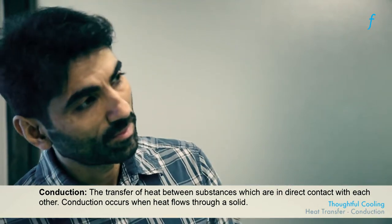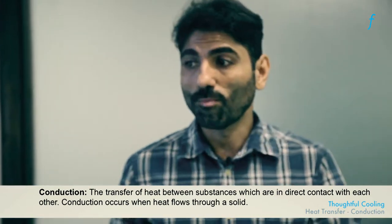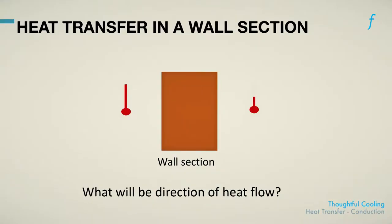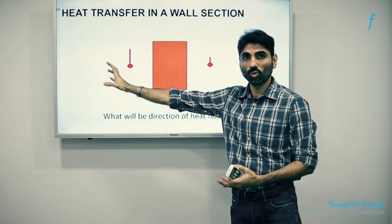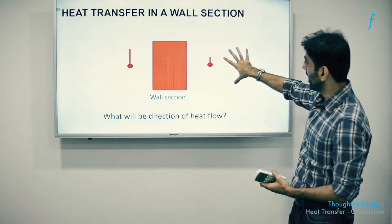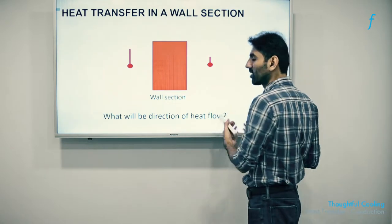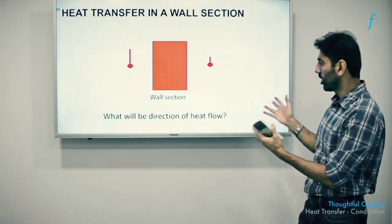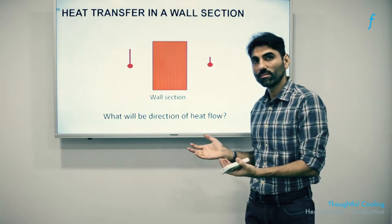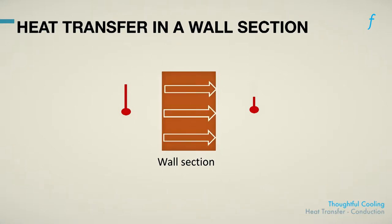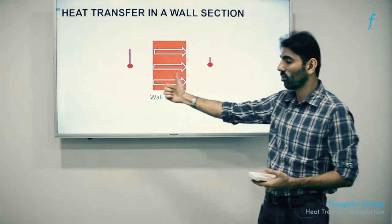Here is a question for all of us to ponder and come up with an intuitive response. Looking at a wall which experiences higher temperature on one side, perhaps through a source of heat such as the sun, and on the other side under the influence of a lower temperature, perhaps the inside of a building — which direction will the heat flow? We will all agree that because the temperature on the left side is higher, heat will flow in that direction.